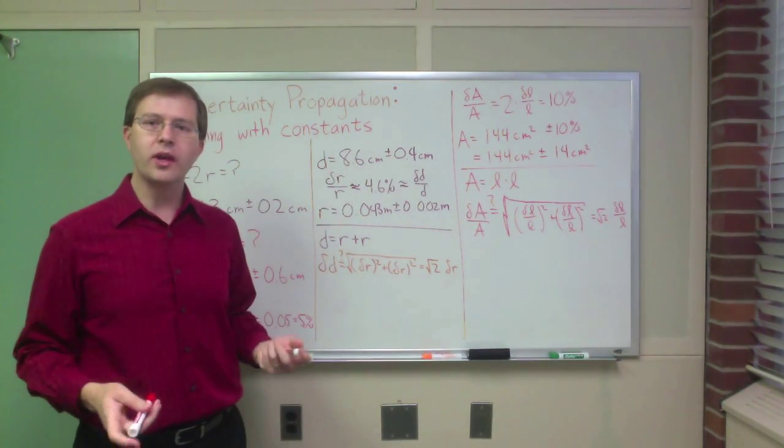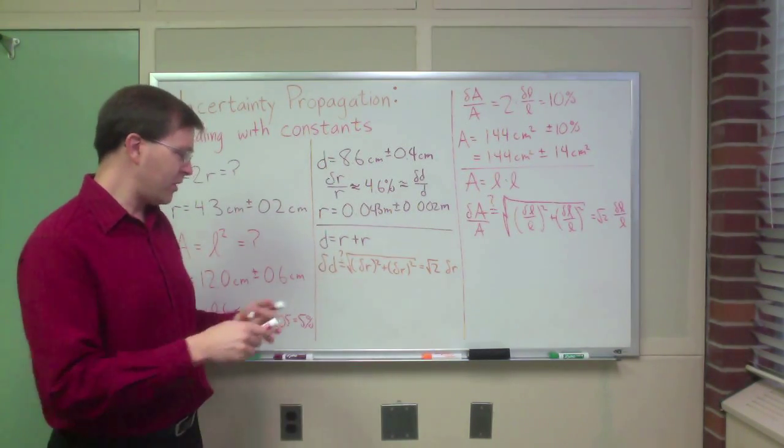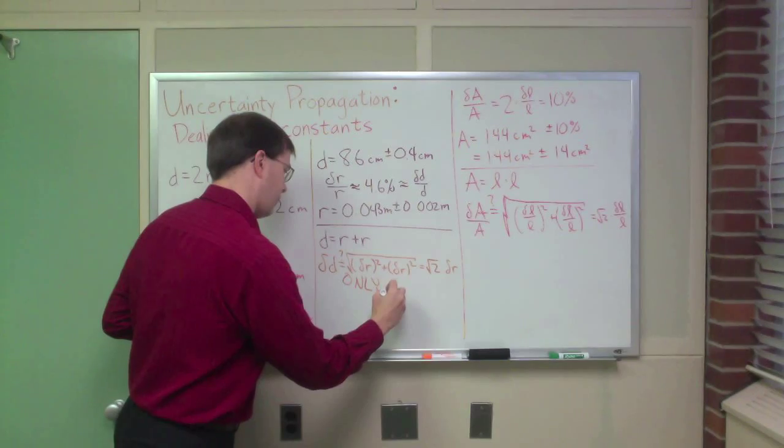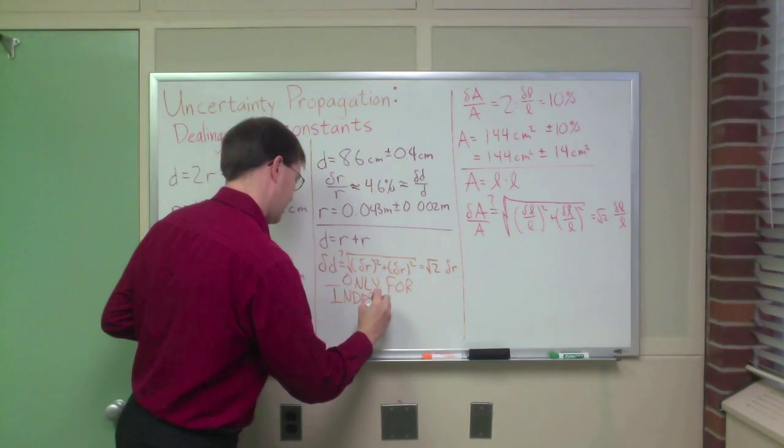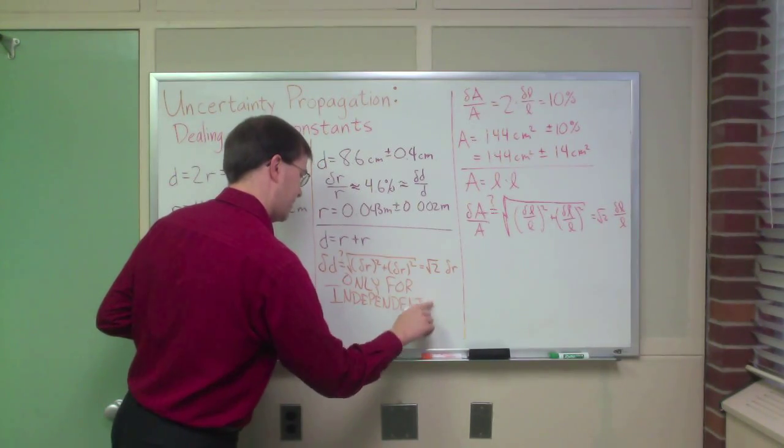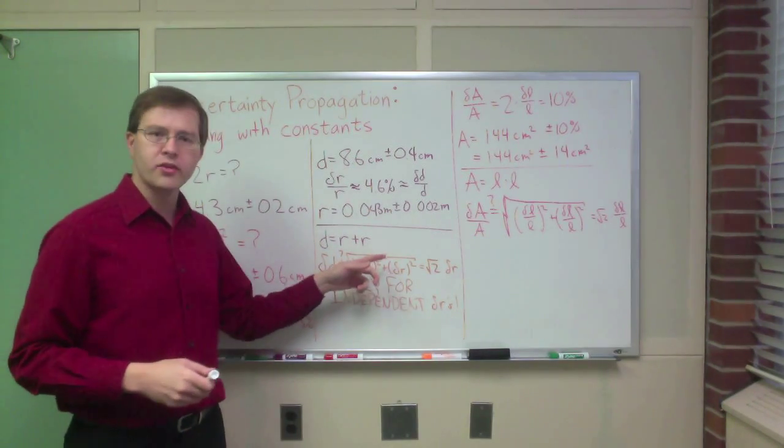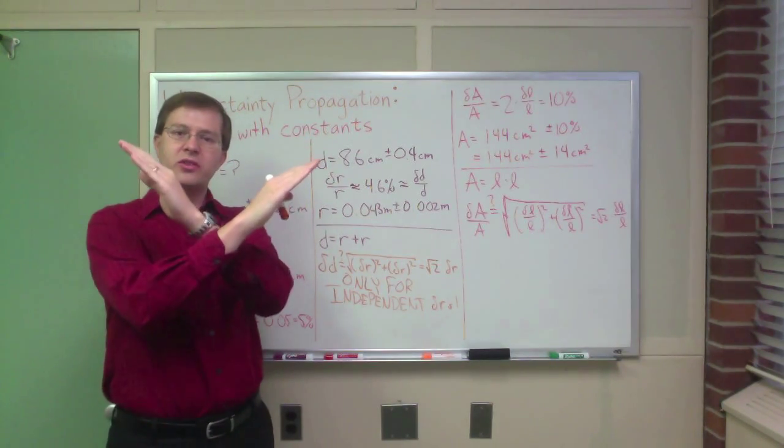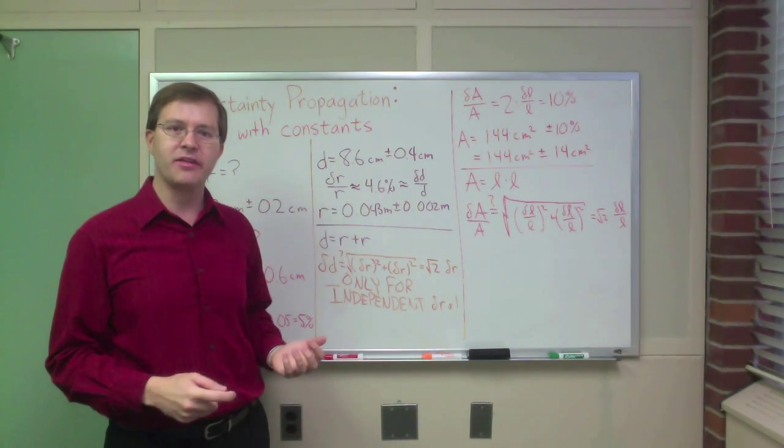Here's the key. Remember that these only apply for the case of independent random errors, independent delta R's. The whole point of the quadrature rule was the assumption that the uncertainty in one part of the sum is independent of the uncertainty in the other. They're sort of conceptually orthogonal. And so you use the square root thing to give your best estimate of how they'll combine.